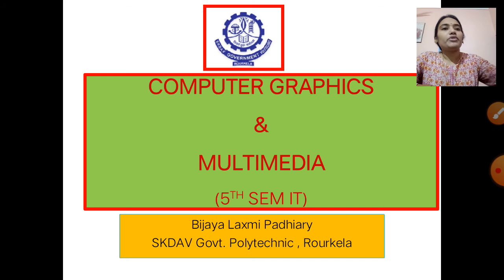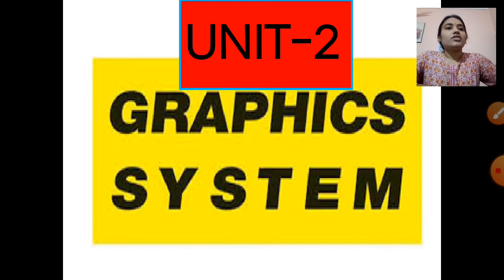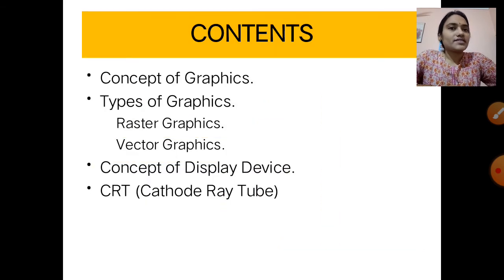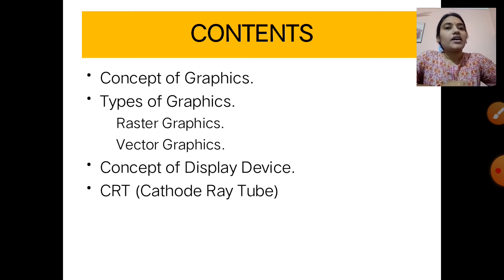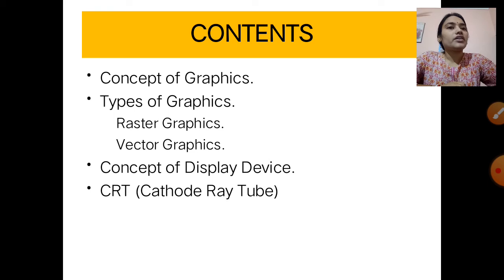In this computer graphics course, unit 2 covers the graphic system: what is graphics, the different types of graphics, the concept of display devices, and how CRT works. These are the contents of today's class.